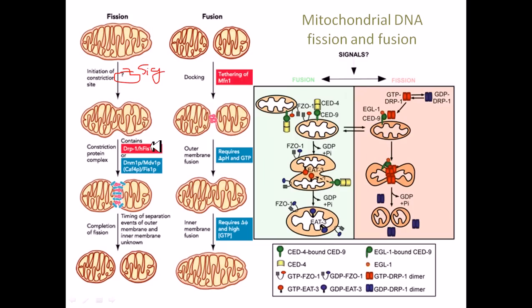They will recruit different types of proteins like DRP1 and HP1, as well as DNM1P or MDV1P. As these proteins are accumulating with each other, they start to make a junction point in the middle layer of this mitochondria. These red proteins are DRP1 and the blue proteins are DNM1P or MDV1P.